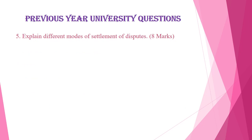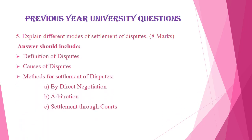The next question is: explain the different modes of settlement of disputes, which carries eight marks. Your answer should include the definition of disputes, the causes of disputes, and the methods for settlement of disputes. There are generally three methods: by direct negotiation between the client and contractor, through arbitration, and settlement through courts. You have to clearly and briefly explain each of these different methods of dispute settlement.